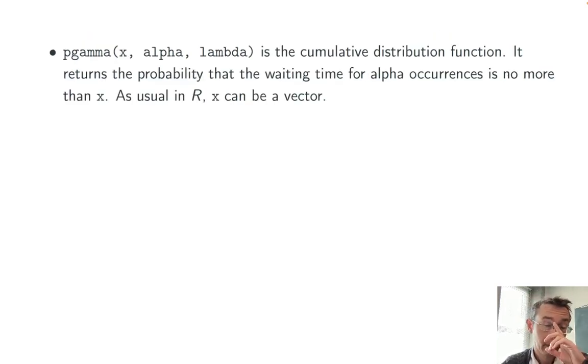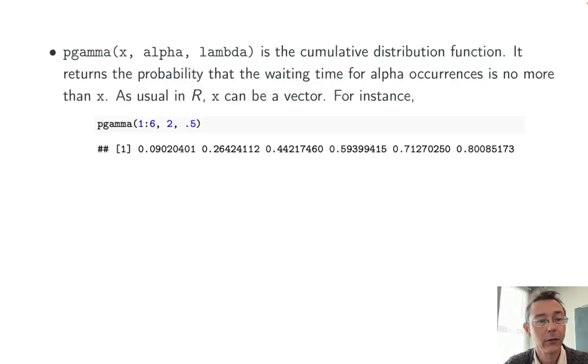Next up is pgamma. This gives you the cumulative distribution function of the specified gamma distribution. It returns the probability that the waiting time for alpha occurrences is no more than X. As usual in R, X can be a vector here. For instance, pgamma(1:6, 2, 0.5) gives the probability that the waiting time is less than or equal to 1, less than or equal to 2, less than or equal to 3, etc., in a gamma distribution with parameters alpha equals 2 and lambda equals 0.5.